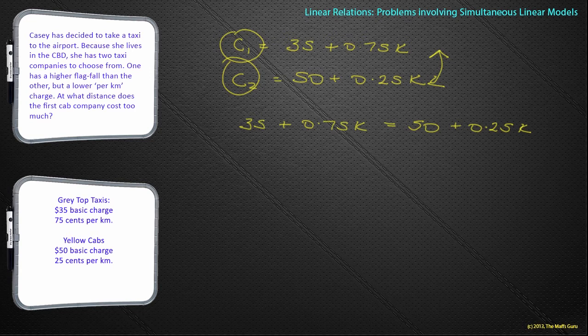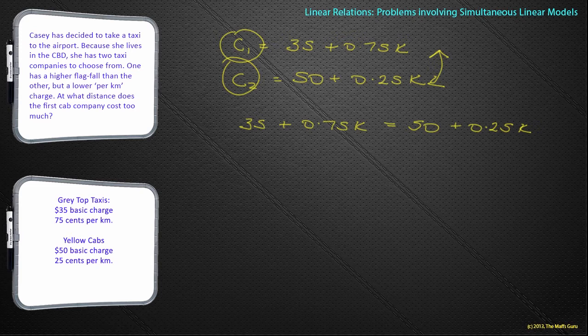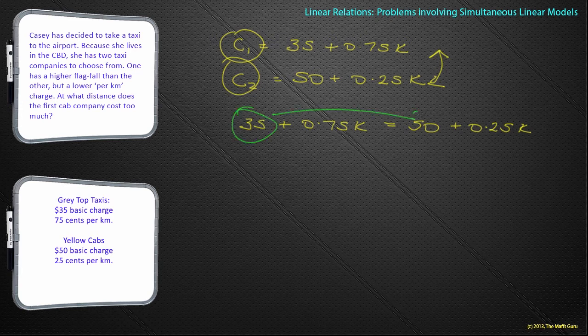That actually is pretty much where the simultaneous linear models, new stuff, finishes. We're now back to basic algebra, because we've got numbers and letter terms, and we're going to try and work out the value of k. Well, to do that we've got to move both k terms to the same side, and I would assume the number side to the same side. Well, 50 is the biggest number, so let's move the 35 over there.